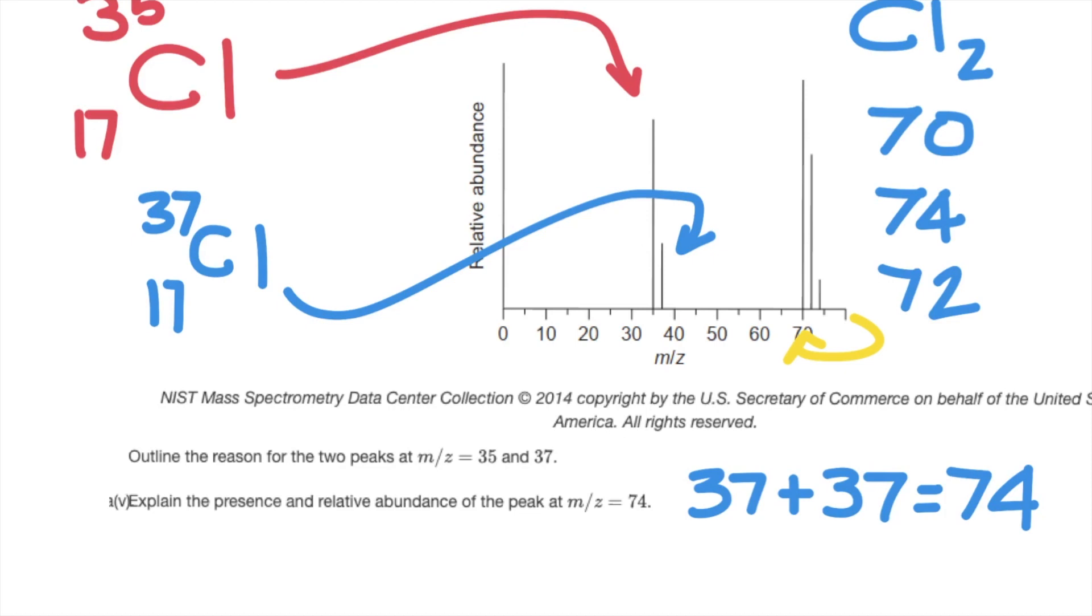72, a 35 and 37 can join together, one chlorine 37, a heavier chlorine, with a lighter chlorine 35, giving you a Cl2 atom of 72. And then of course two 37 can combine to give you a total of 74.